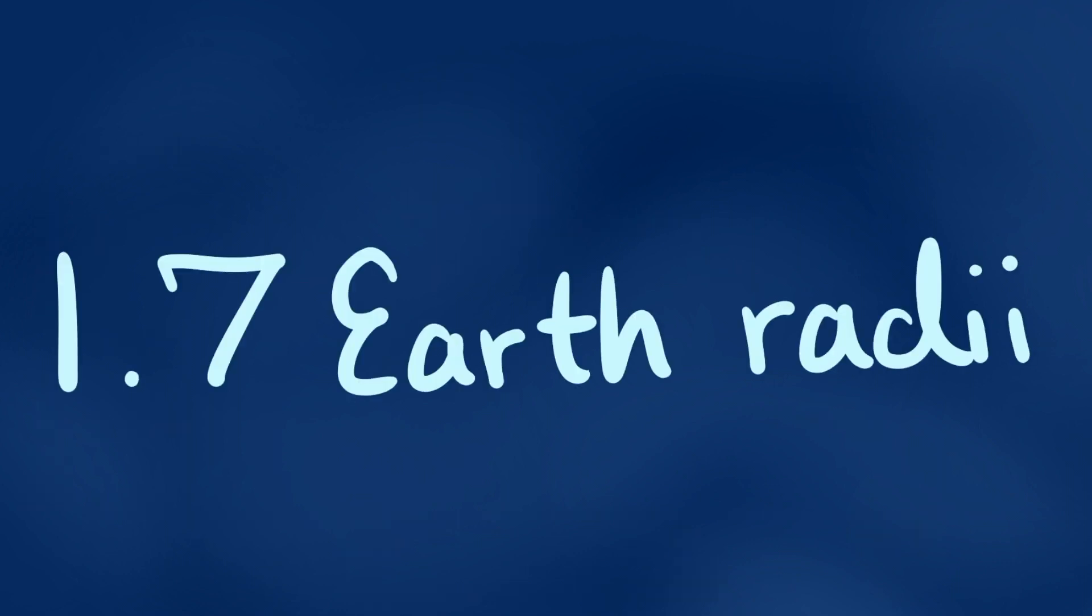This valley lands at around 1.7 Earth radii. The radius valley has intrigued scientists, and several new studies have attempted to explain its cause. If these planets are so common, why are there hardly any around this size?